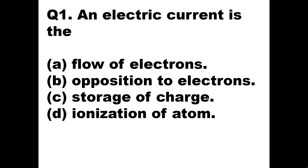Question 1: An electric current is the — options are: flow of electrons, opposition to electrons, storage of charge, or ionization of atom. Obviously whenever we say electric current is flowing, it is the flow of electrons.